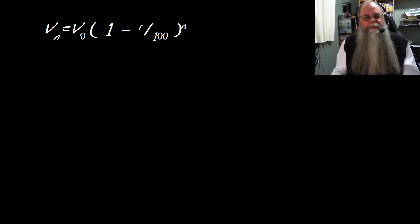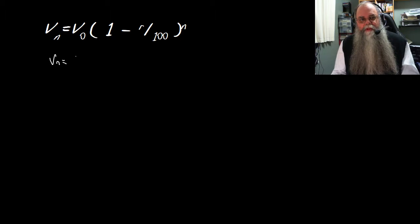The formula for reducing balance depreciation is VN = V0(1 - R/100)^N. VN is the book value or written down value of the item after a length of time.